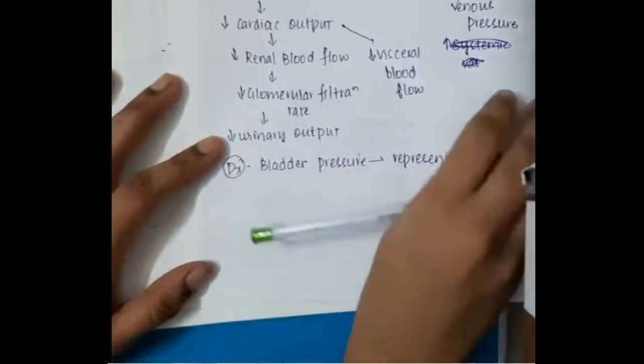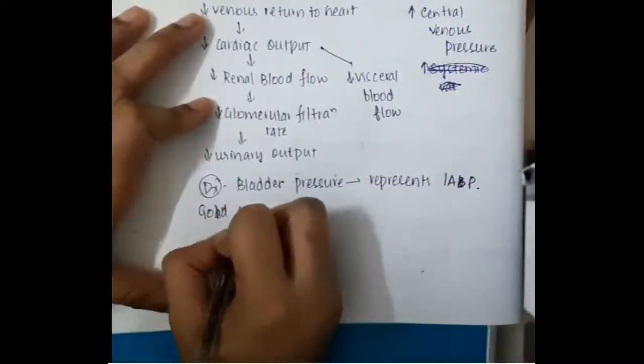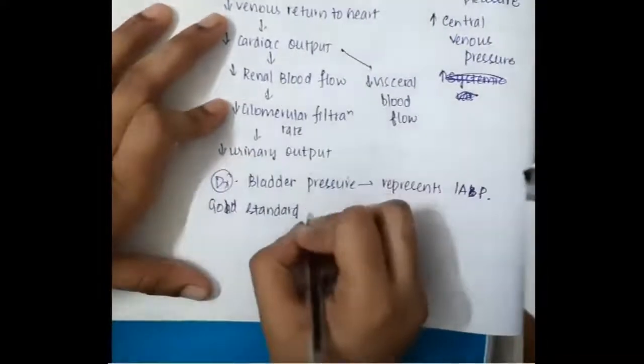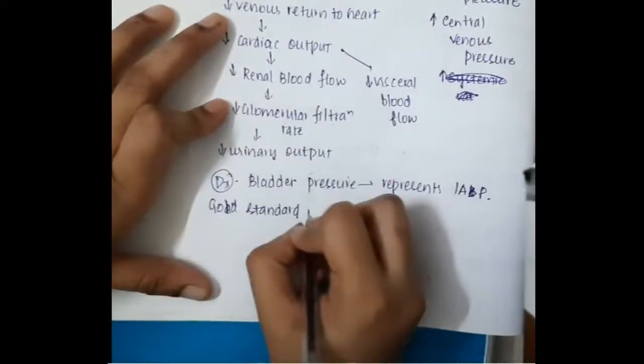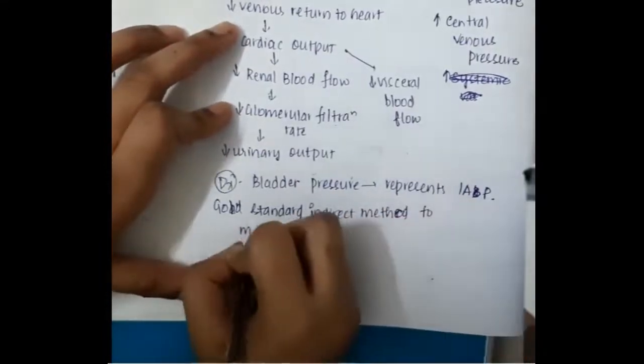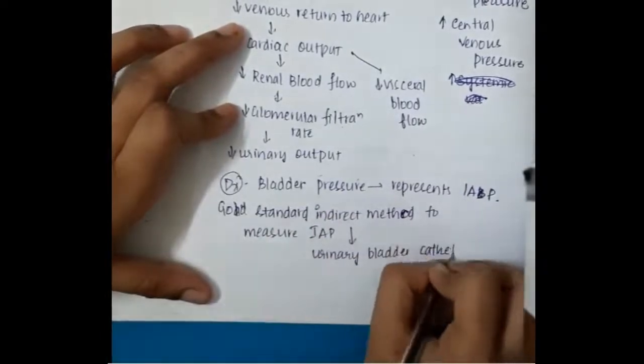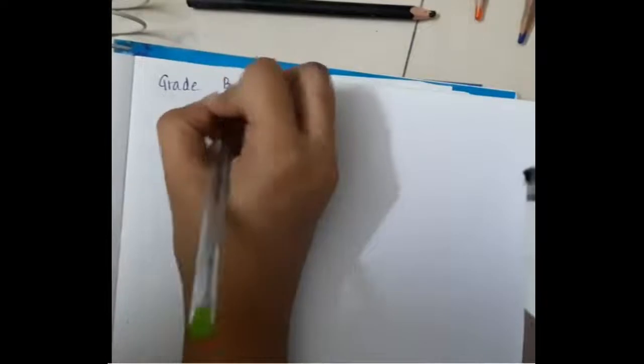Diagnosis: bladder pressure is the important thing for diagnosing the intra-abdominal pressure because this bladder pressure will represent the intra-abdominal pressure. Gold standard indirect method for diagnosing or for measuring intra-abdominal pressure is urinary bladder catheter.